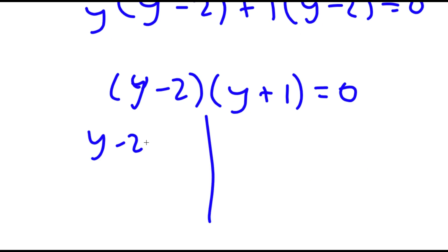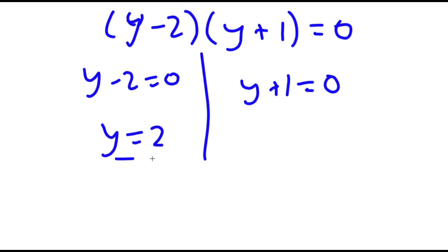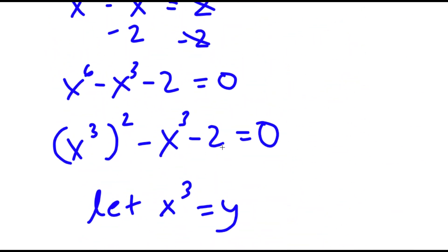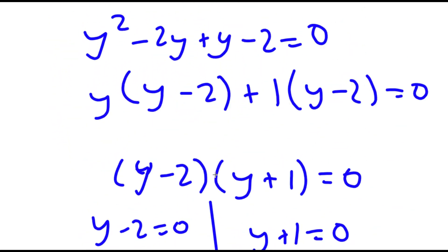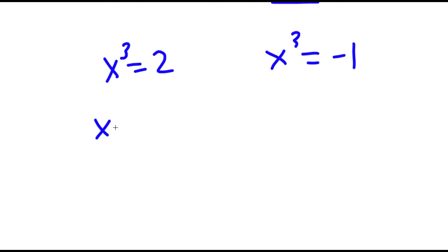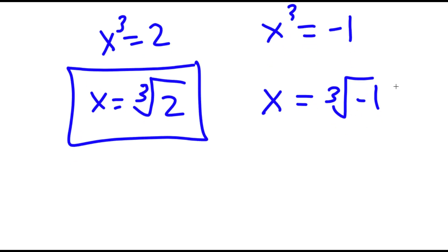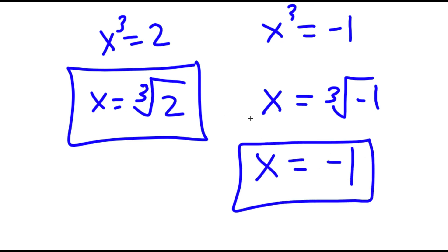This gives me two equations: y minus 2 is equal to 0 and y plus 1 is equal to 0. So y equals 2 and y equals negative 1. Remember how we let x to the power of 3 equal to y. So now I have x to the power of 3 is equal to 2, and x to the power of 3 is equal to negative 1. Taking the cube root on both sides gives x equals the cube root of 2, and x equals the cube root of negative 1, which is simply negative 1. So these are my two solutions.